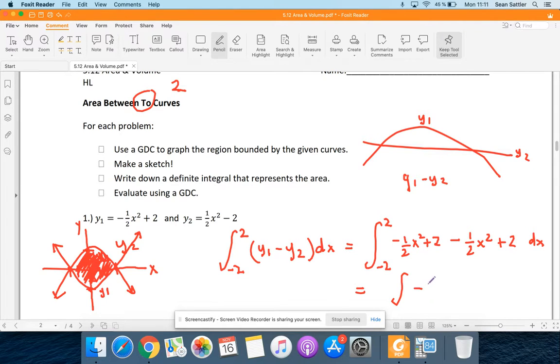That's minus one x squared, because negative one-half minus one-half is negative one. And then two plus two is four.